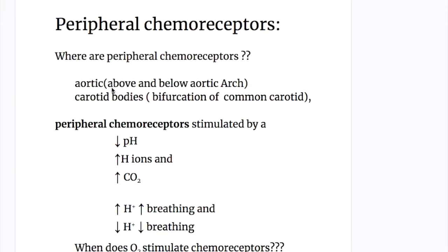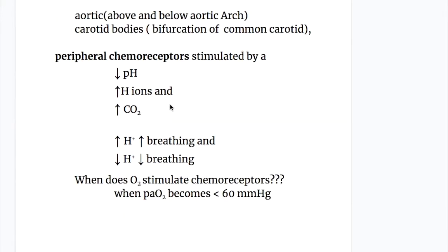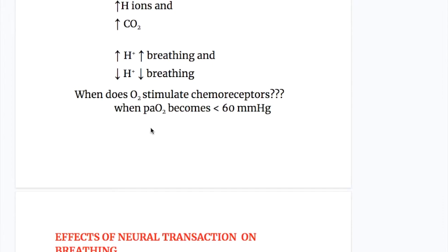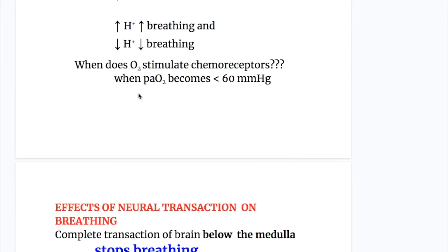The peripheral chemoreceptors are of two types: aortic and carotid. The aortic chemoreceptors are above and below the aortic arch, and the carotid body chemoreceptors are at the bifurcation of the common carotid artery. They are stimulated by a decrease in pH, increase in hydrogen ion concentration, and increase in carbon dioxide. Increased hydrogen ion concentration increases breathing; decreased hydrogen ion concentration decreases breathing. Oxygen stimulates the chemoreceptors when PO₂ becomes less than 60 mmHg.